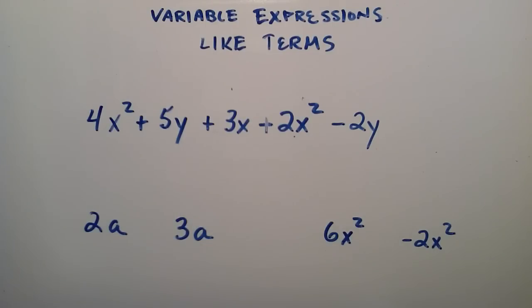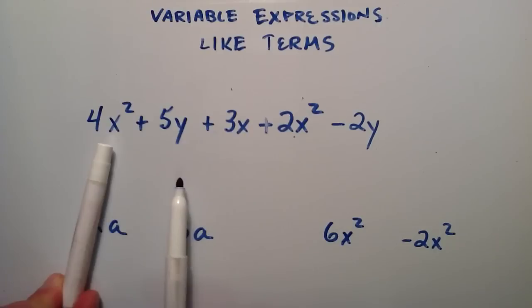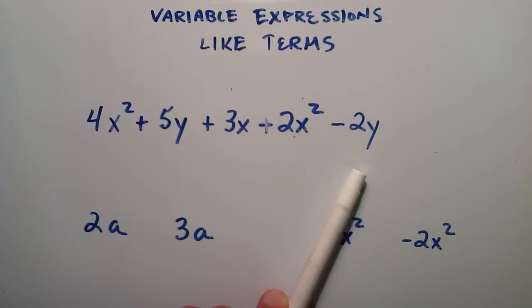So what are like terms? Well, these are like terms and these are like terms. So what makes them like terms? If we cover up the coefficient 2 and the coefficient 3, then the remaining part of our term is the same. They're both a. And if we cover up the coefficient 6 and the coefficient negative 2, then the remaining part of these terms are both x squared. So when you cover up the coefficient, if the remaining part is the same, then you have like terms.